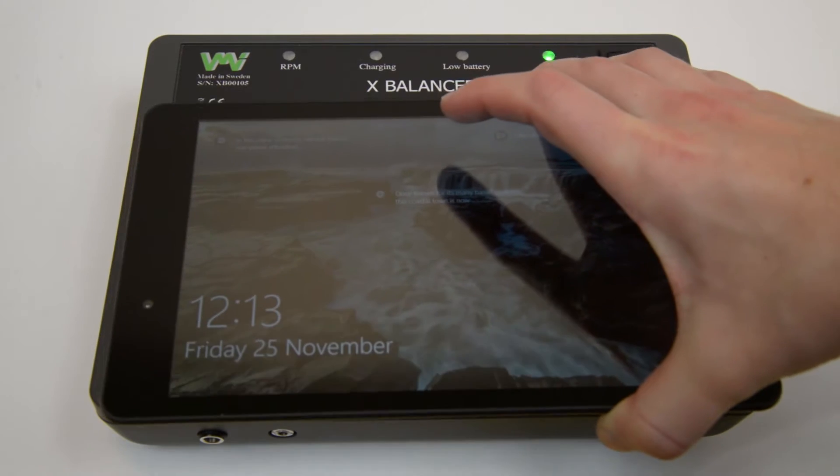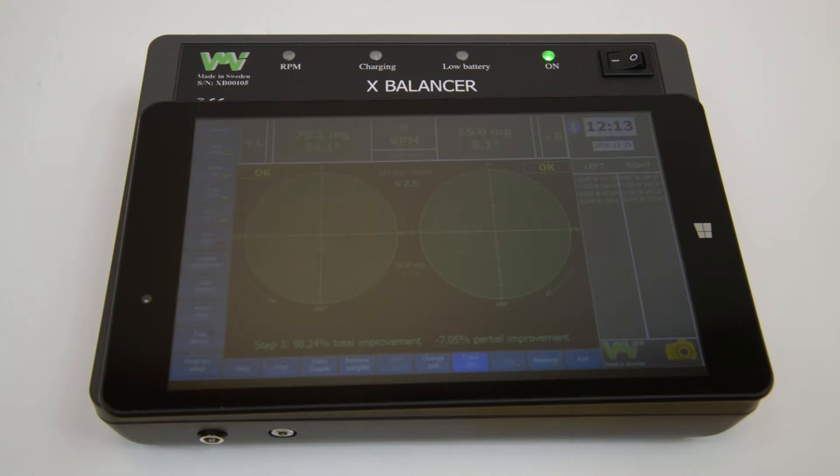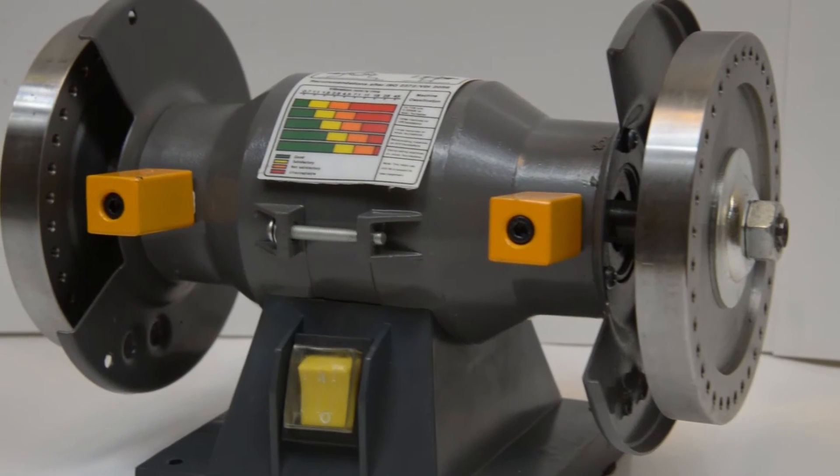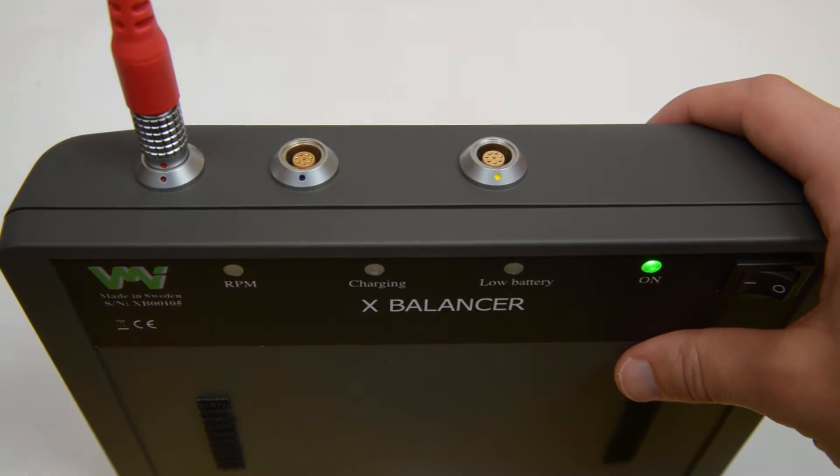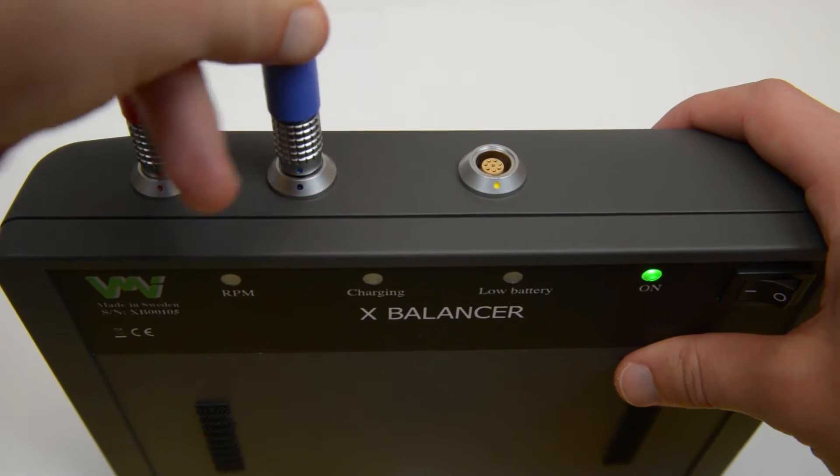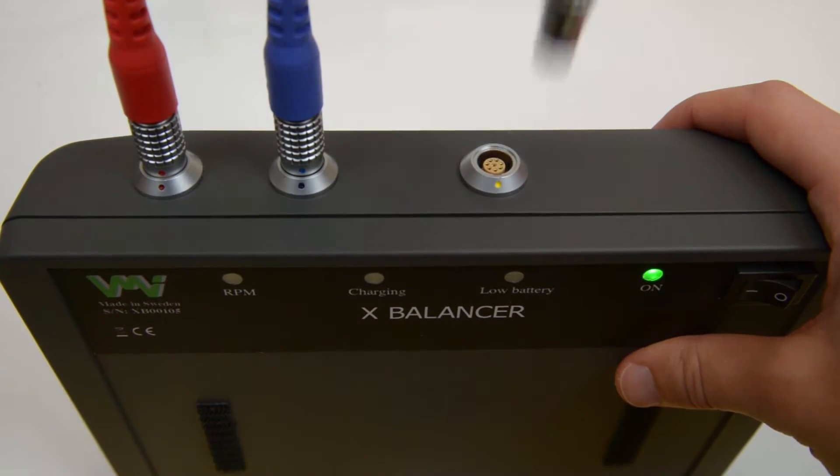The tablet will be attached to the instrument by using Velcro. Here is an example of two-plane balancing. To start the balancing, connect the three cables. The cables and sockets are marked with red, blue, and yellow.